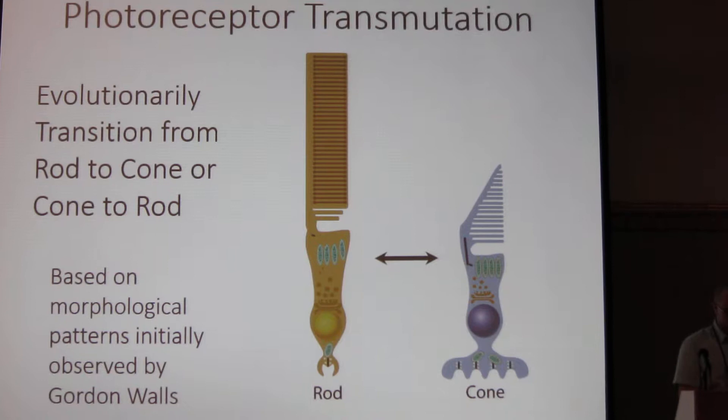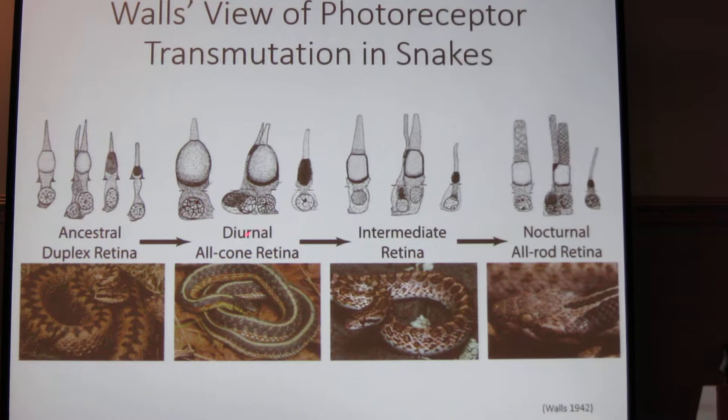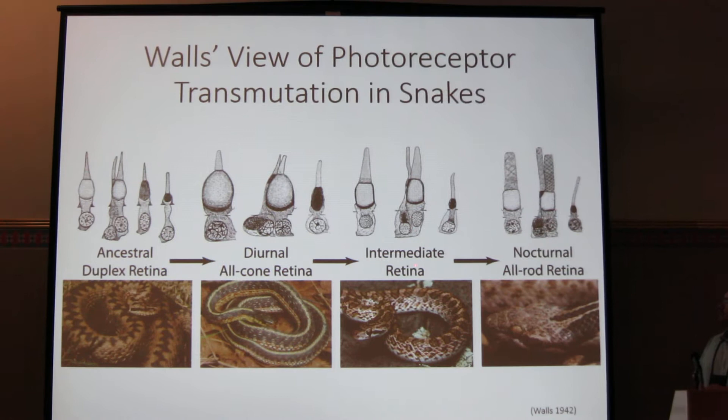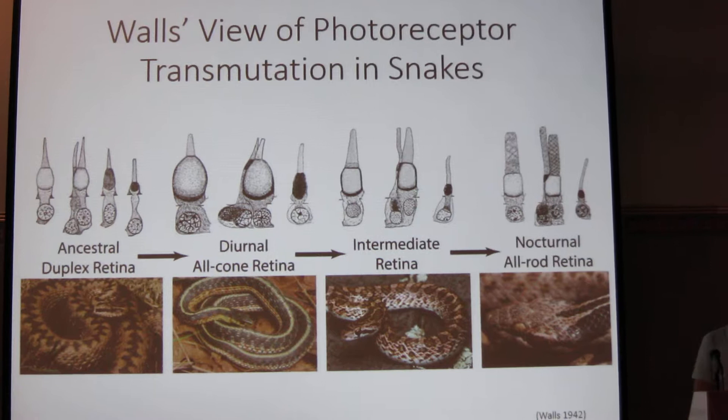If you look at Walls' view of photoreceptor transmutation in snakes, we can see that he posited we start from an ancestral duplex retina that contains both cones and rods, and at some point we transition evolutionarily to a diurnal all-cone retina. From there we have some intermediate retinas, which are largely animals that are either partly nocturnal or more secretive, so in more dim-light environments, and then in some animals that are highly nocturnal, we have the evolution of an all-rod retina.